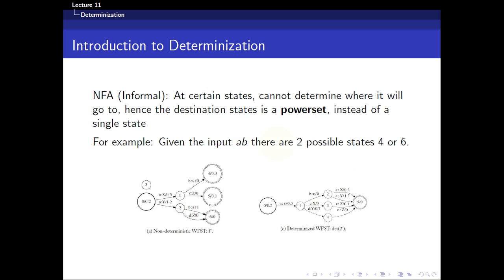For example, consider this non-deterministic transducer. If you have an input of a-b-a-b, you can either end up in state four or in state six. You can't determine where the input is going, which is why we call this a non-deterministic finite automaton.